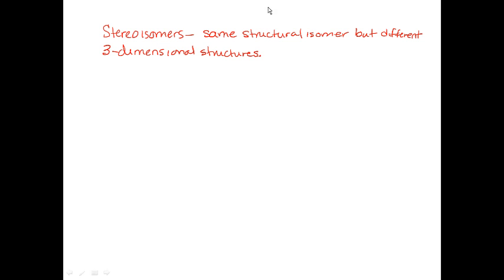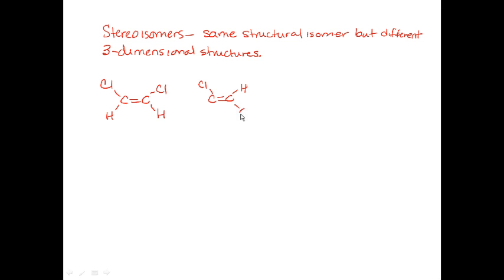The examples we had seen before — the so-called geometric isomers that your textbook talks about — were things like the cis-trans isomers that are involved in a double bond. So for instance, these were our two examples of the cis and the trans stereoisomers, or the cis and trans geometric isomers.